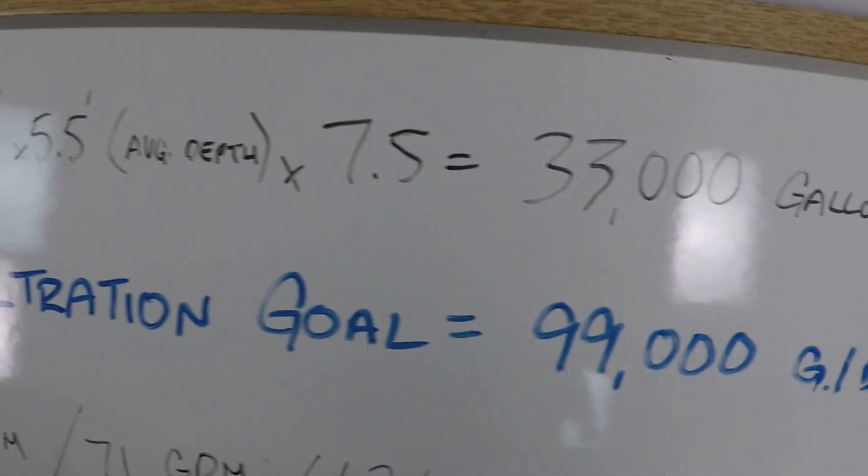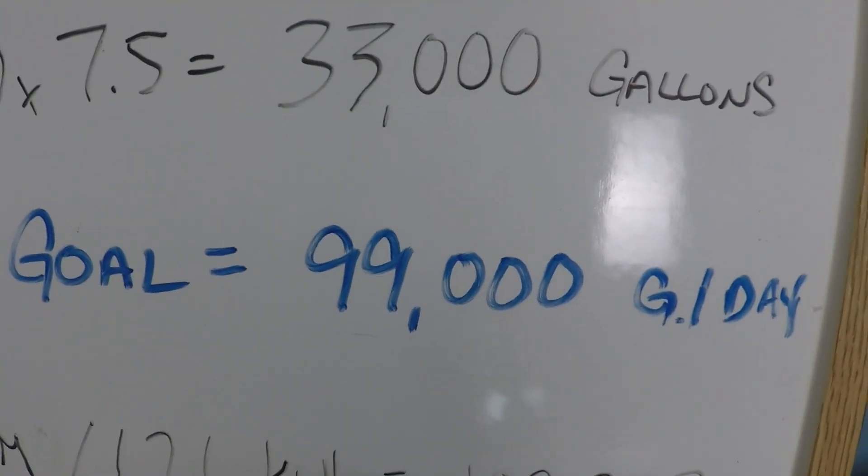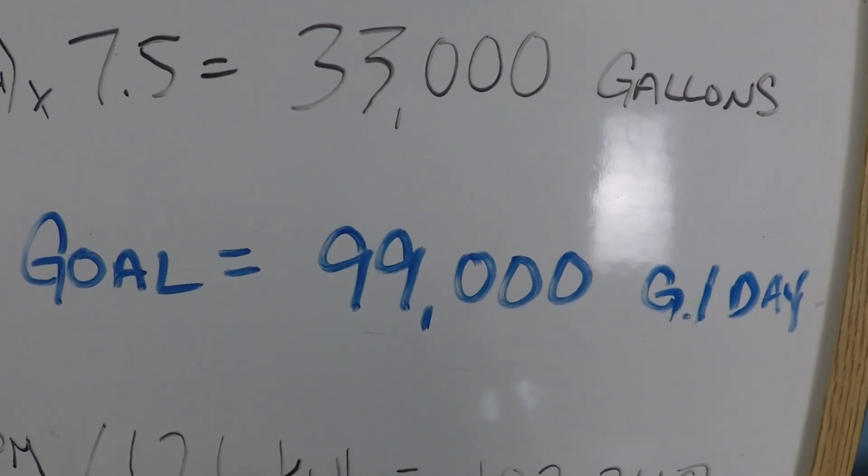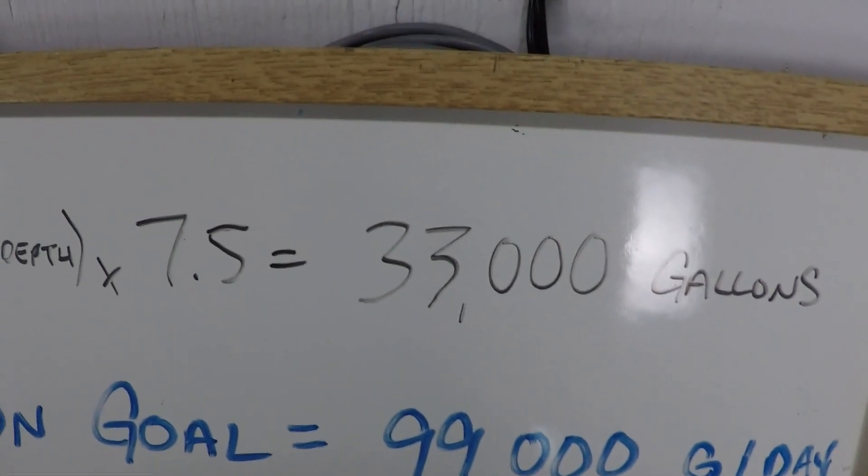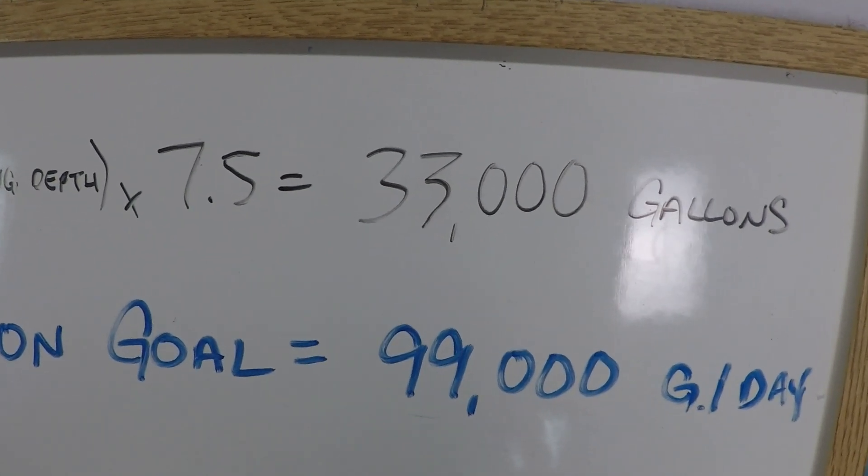Let's look at first our filtration goal and as you can see, three times the volume of the swimming pool, 99,000 gallons per day. And the reason why that number is three times the volume is we want to effectively filter all of the water in the pool.